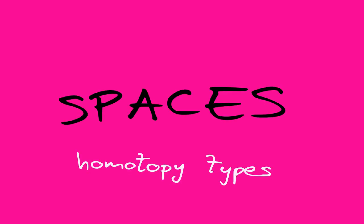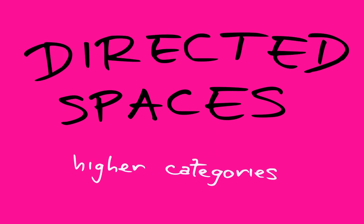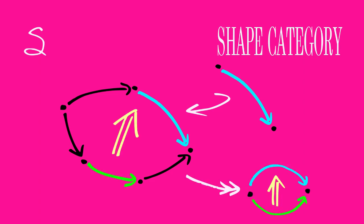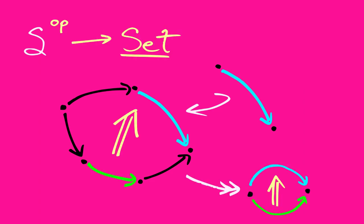Combinatorial models of spaces, aka homotopy types, or directed spaces such as higher categories, are often based on the idea of a shape category. The objects of a shape category are the shapes that the cells of the space may have, and morphisms are ways in which a shape can map to another shape. A space is then a presheaf on the shape category satisfying some properties.